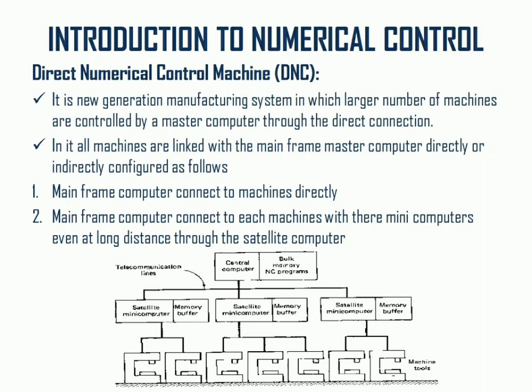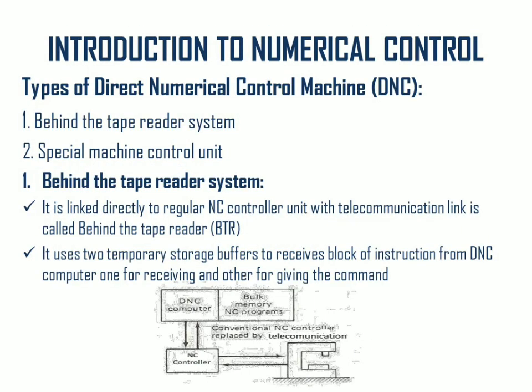One type of DNC machine is the behind the tape reader, or BTR system. It is linked directly to the regular NC controller unit with a telecommunication link. It uses a temporary storage buffer to receive blocks of instructions from the DNC computer — one buffer for receiving and one for giving commands. The DNC computer is attached with bulk memory of NC programs, and the controller constantly takes feedback and gives instructions to the DNC computer, which is connected to the machine tool.